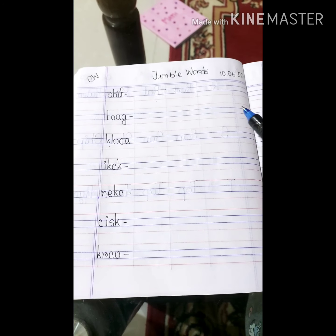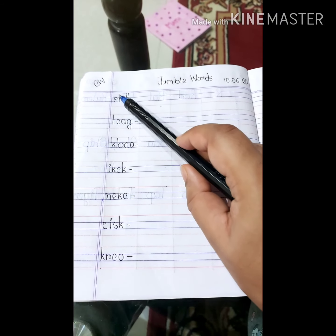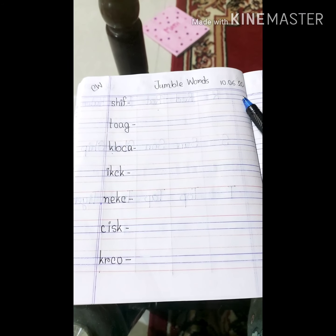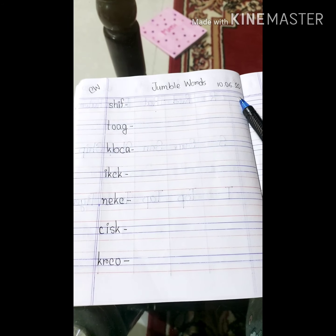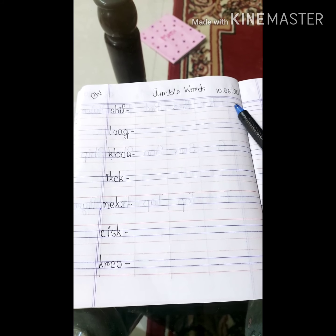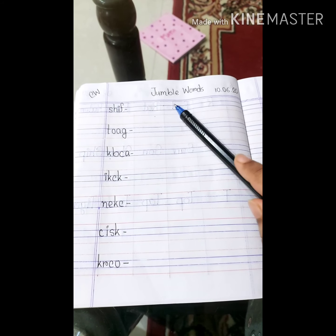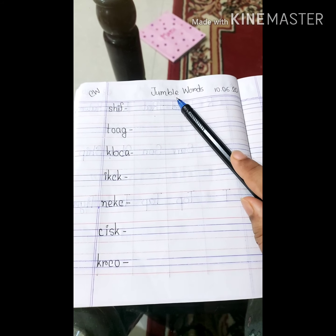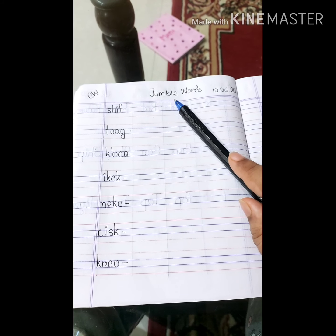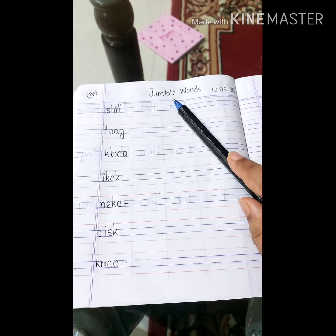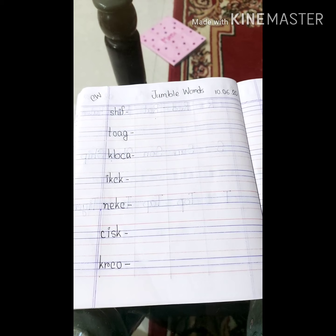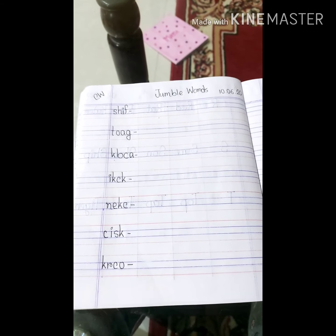Students, first write down CW and D. Today is 10th June. Today we are going to learn some jumble words. Are you ready to start the class? Hope all of you like to do some jumble words.